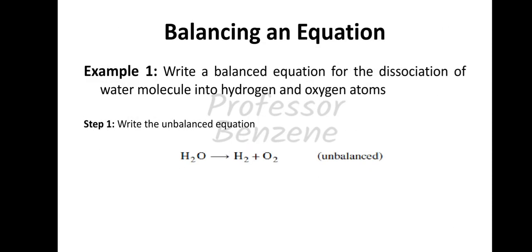Now let's see how a chemical equation is balanced. Here we have an example: H2O will give H2 plus O2. The question asks: what is the balanced equation for the dissociation of water molecules into hydrogen and oxygen? The unbalanced equation is H2O → H2 + O2.